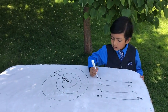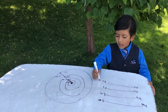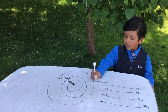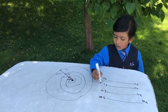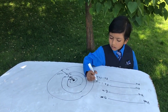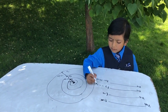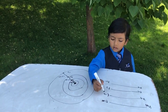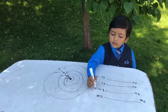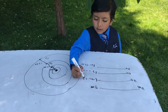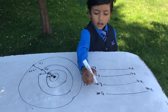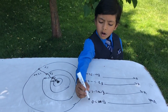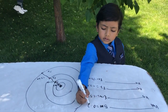E1 is equal to negative 13.60 eV, E2 is equal to negative 3.40 eV, E3 is negative 1.51 eV, and E infinity is 0.00 eV.